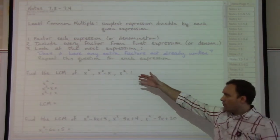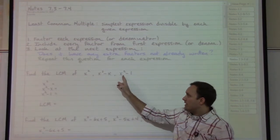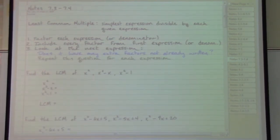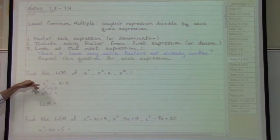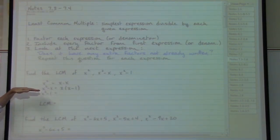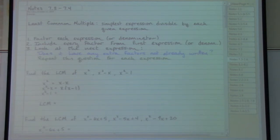In this first example, we're going to want to factor each of these three expressions as much as possible and then move on to step two. Factoring that first expression, to be technical, we would want to write x times x. Moving on to the second expression, we're using our factoring checklist and we're going to have a greatest common factor of x. When we pull the x out, we're going to have a leftover x minus one. Moving on to the third expression, there is no GCF. That has two terms, so we're going to use our difference of squares factoring formula, and that will be x plus one times x minus one.